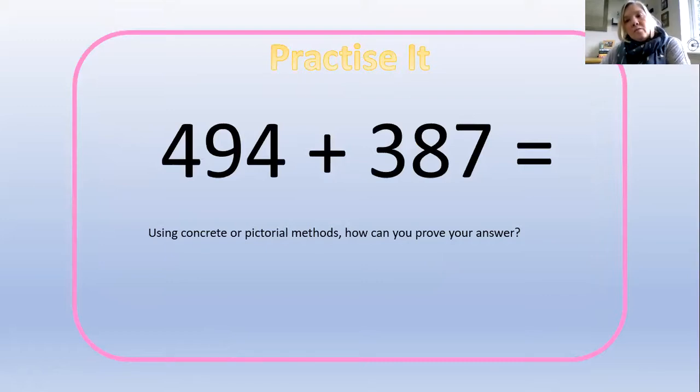I would like you to have a look at this calculation. 494 plus 387. I would like you to have a go at using either the concrete method or pictorial method to prove your answer. The only thing you're not going to do is very quickly put that down in formal column addition and get that down. Either concrete or pictorial is the way that you are going to show your answer. Off you go.